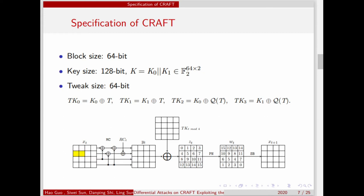There are five operations in the one-round function: MixColumn MC, round constant RC, AddTweakey, permute neighbors PN, and S-box SB. MC is a simple linear transformation, and there is a special property that the last two rows are unchanged. It is one of the critical properties of our attack. In RC, a constant is XORed only on certain cells. The round constant XOR on these two cells will not influence our attack, so we will omit this operation.